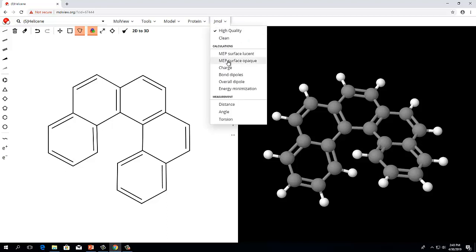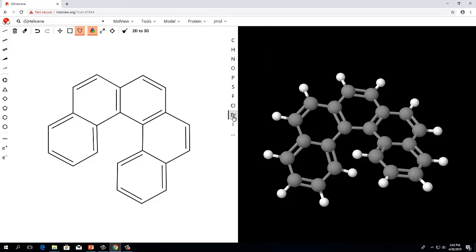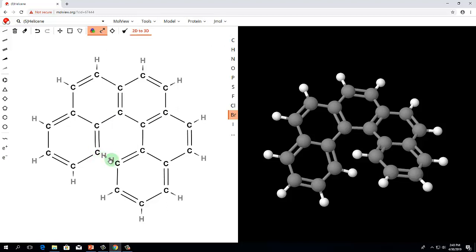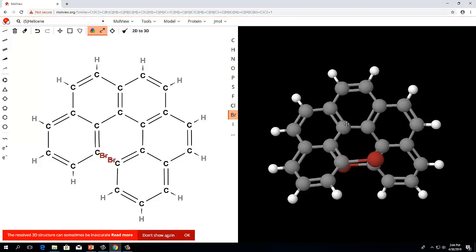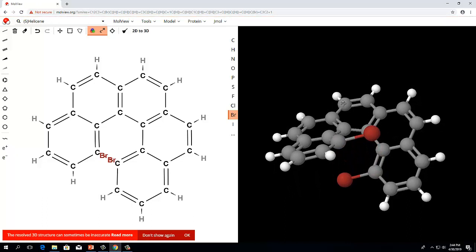To create a model for substituted 5-helicene, choose the atom you wish to insert from the column shown in the middle of the screen. To illustrate, choose bromine, Br. Once bromine is chosen, you can then click on each of the hydrogens that you wish to replace with bromine. They are very close to one another, so you will need to do this carefully. When you have added the two bromine atoms, click on 2D to 3D to render the new system.